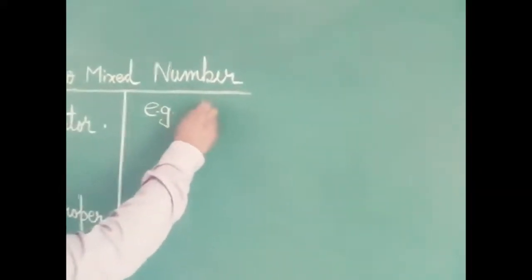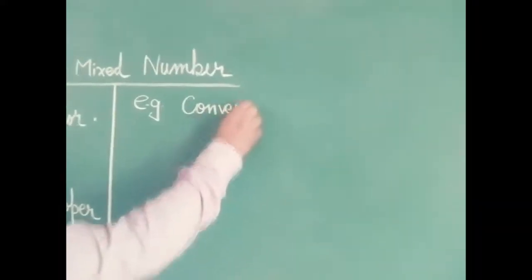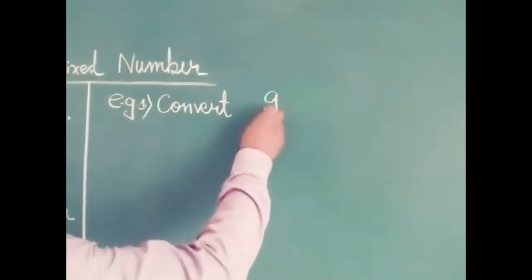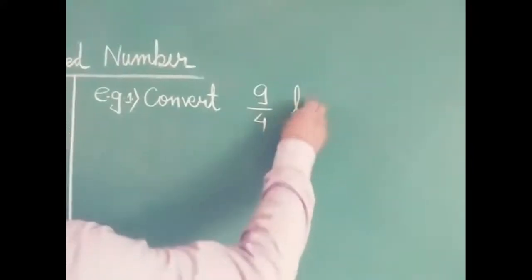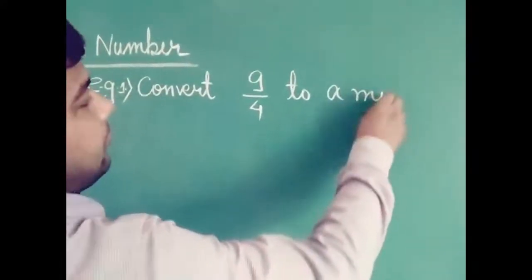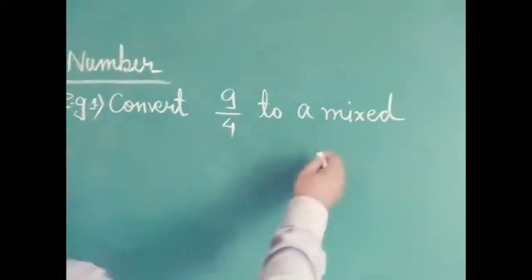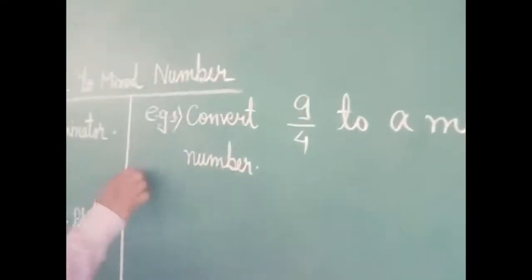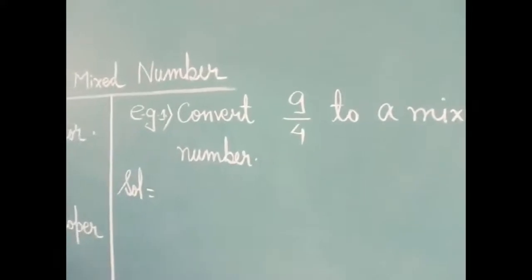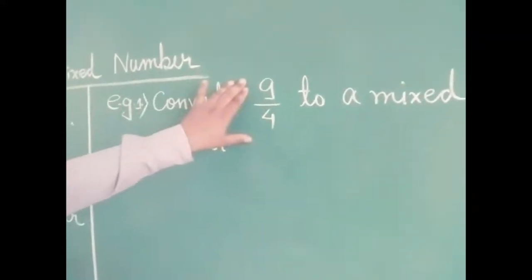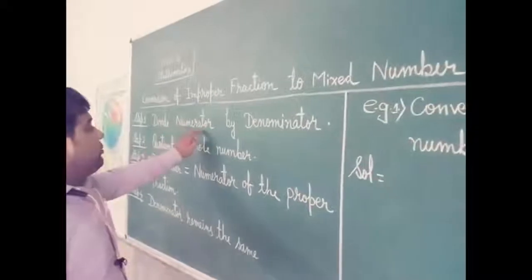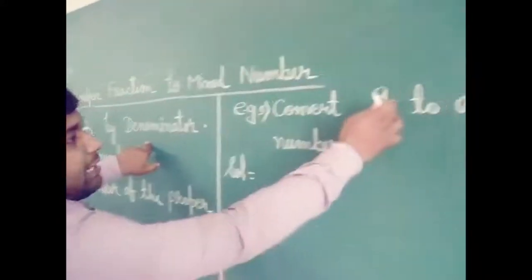See the example. Convert 9 by 4 to a mixed number. Clearly, 9 by 4 is an improper fraction, so we convert it to a mixed number. Step 1 is to divide the numerator by the denominator, so divide 9 by 4.